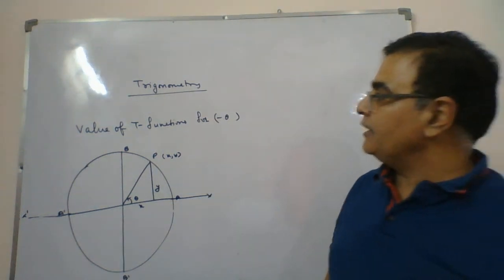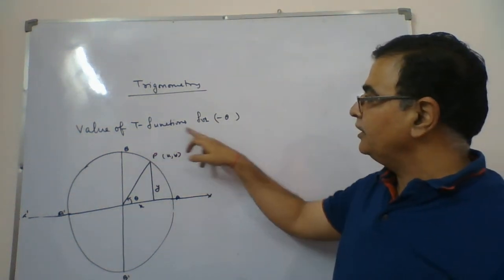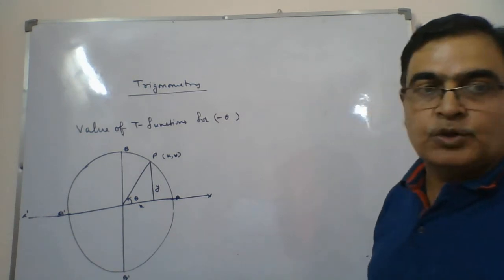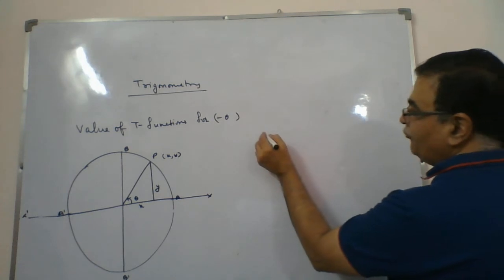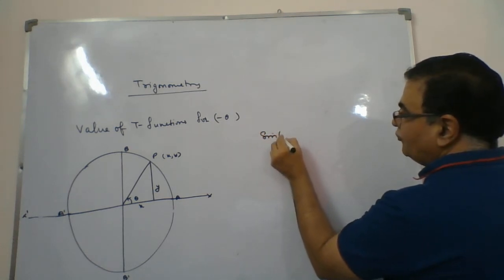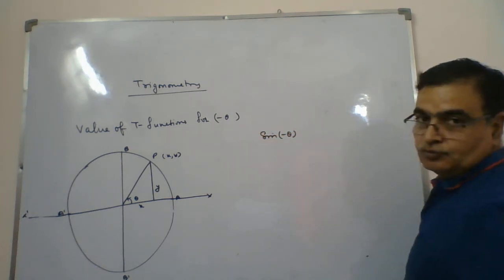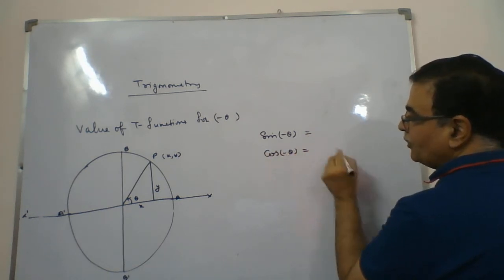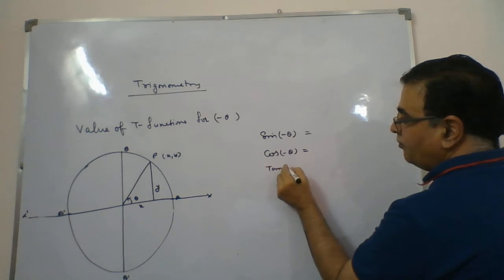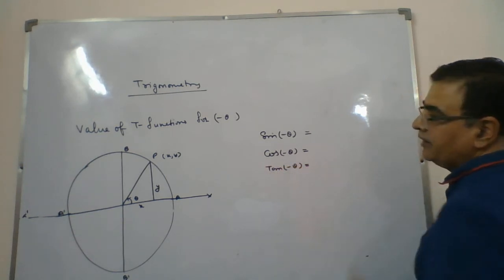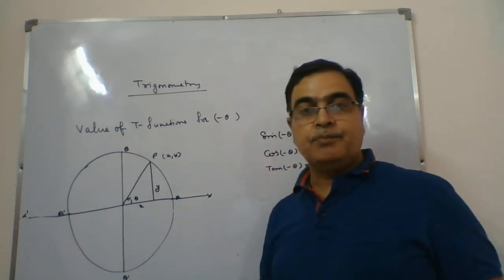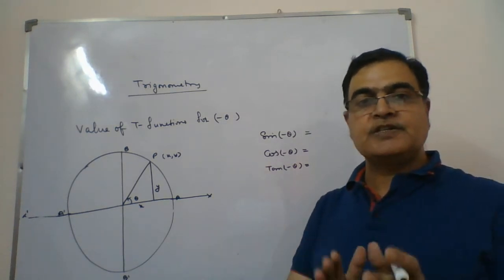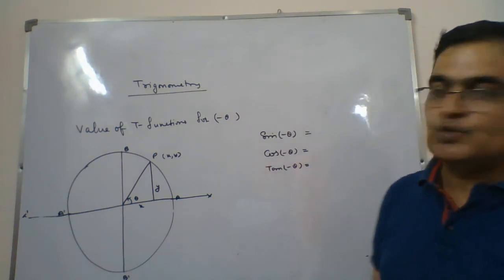The new topic is finding the value of trigonometrical functions for minus theta. If someone says sine of minus theta, what must be the answer? Cos of minus theta, what must be the answer? Tan of minus theta, what must be the answer? When the angle theta is replaced by minus theta, what changes come in the trigonometrical ratios — we need to find out.